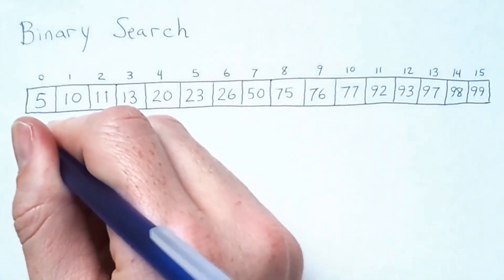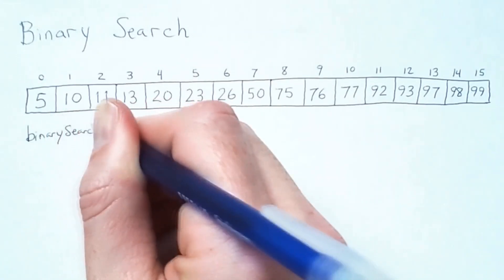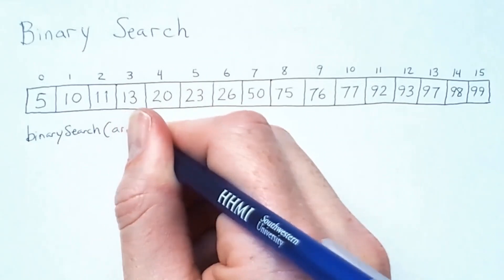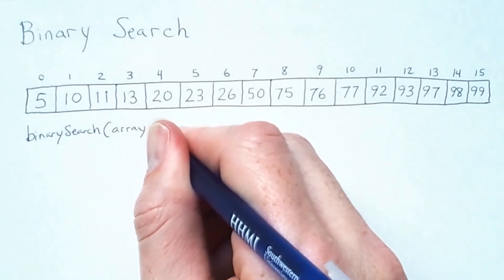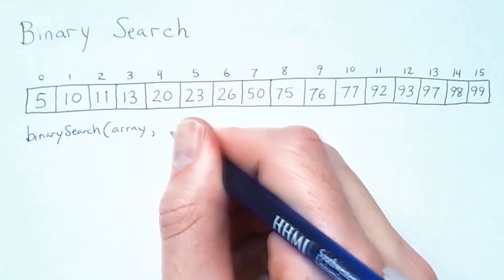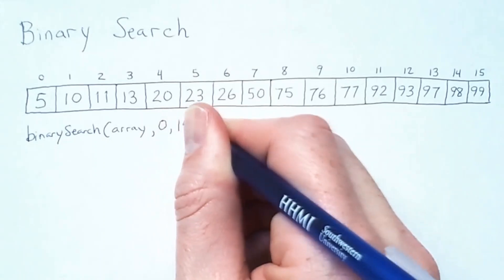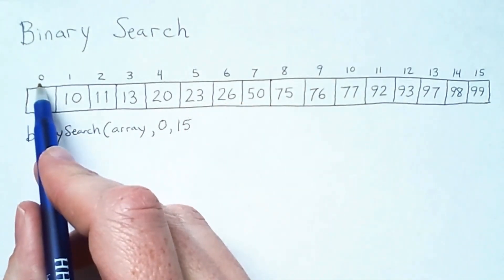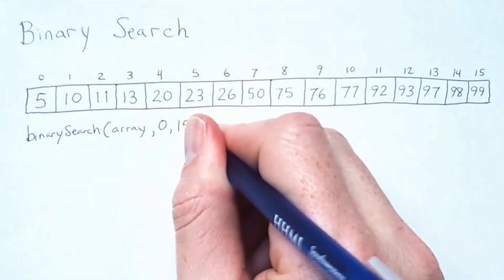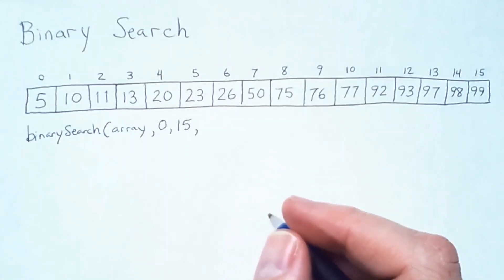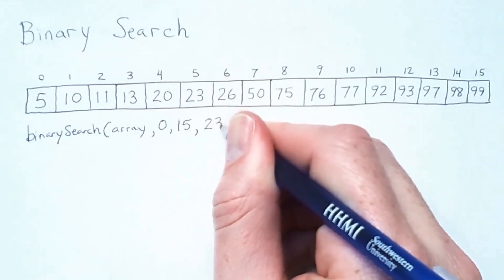For example, if I have a binary search method that takes an array, which we'll assume refers to this one here, as well as a range of index values, inclusive. So 0 to 15 would mean we're searching from the first index 0 all the way up to the last index 15. And then finally, we have a search key, which is a specific value in the array that we're searching for. In this example, we'll search for 23.